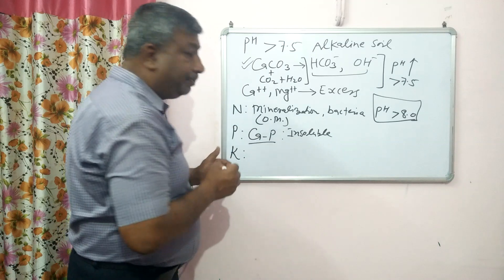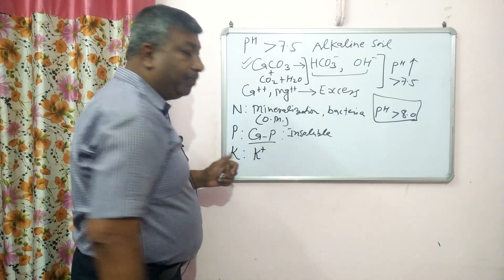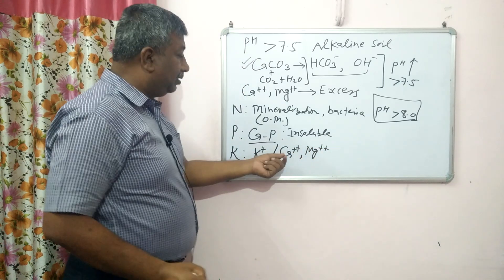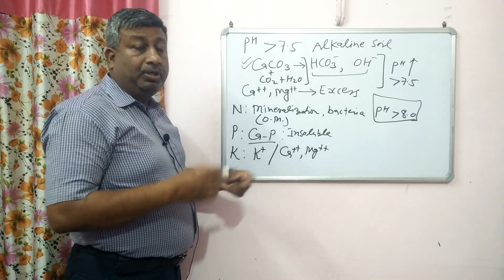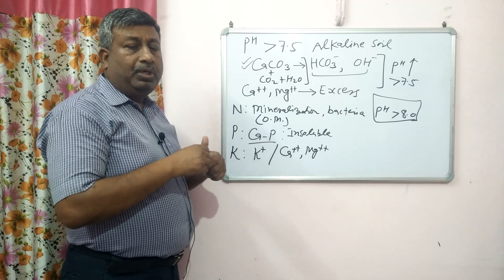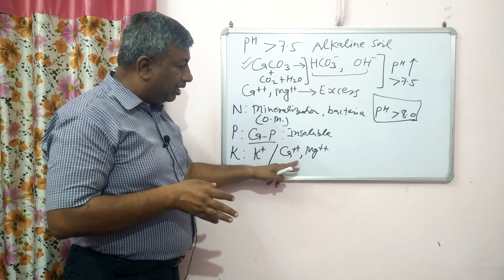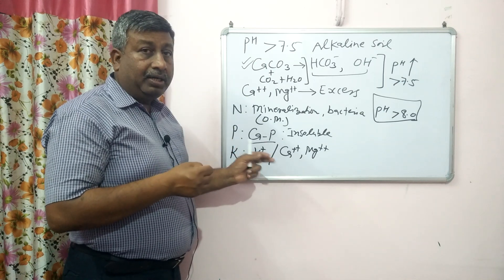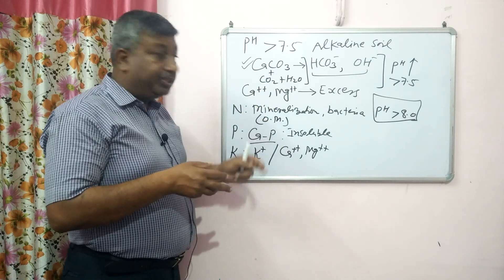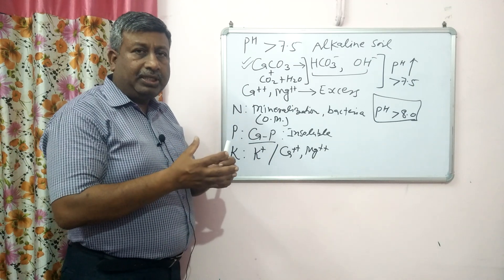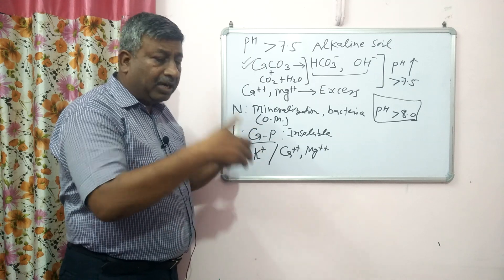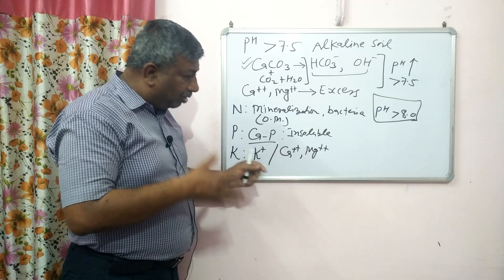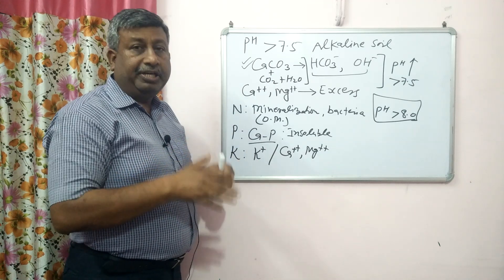The next nutrient is potassium. Potassium is absorbed by the plant as the K⁺ ion, but there is dominance of calcium and magnesium ions. When calcium and magnesium are in excess, they dominate over potassium on the clay complex or CEC, because calcium and magnesium are divalent while potassium is monovalent. Clay particles hold divalent ions more strongly, so potassium is held less. Additionally, calcium and magnesium are present in greater amounts in solution and compete with potassium for absorption by plant roots. So potassium faces severe competition from calcium and magnesium, and its availability is reduced.